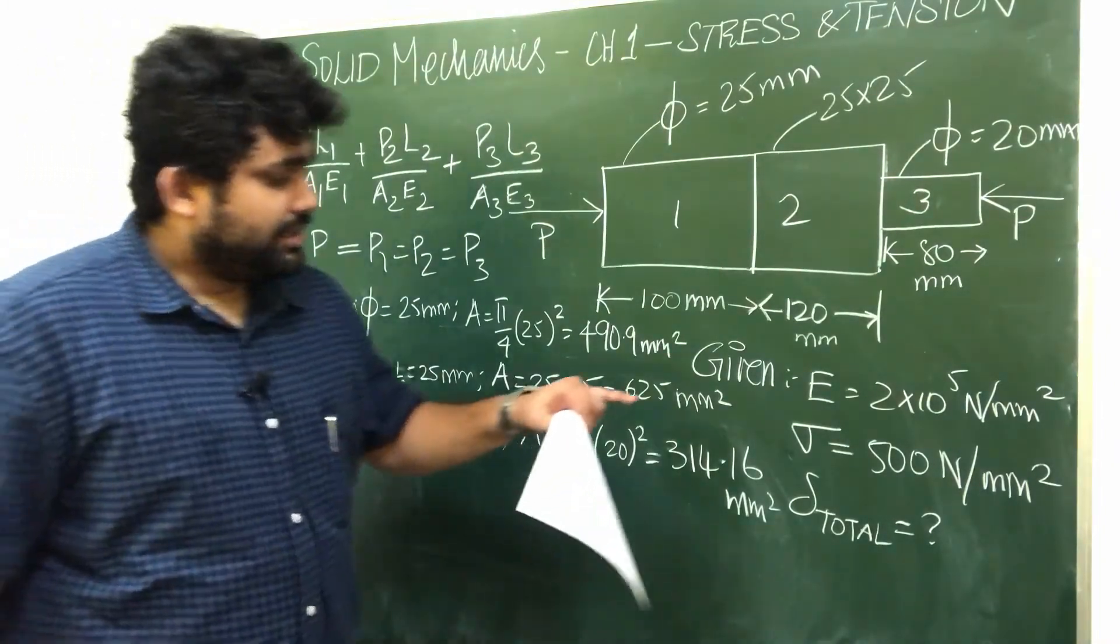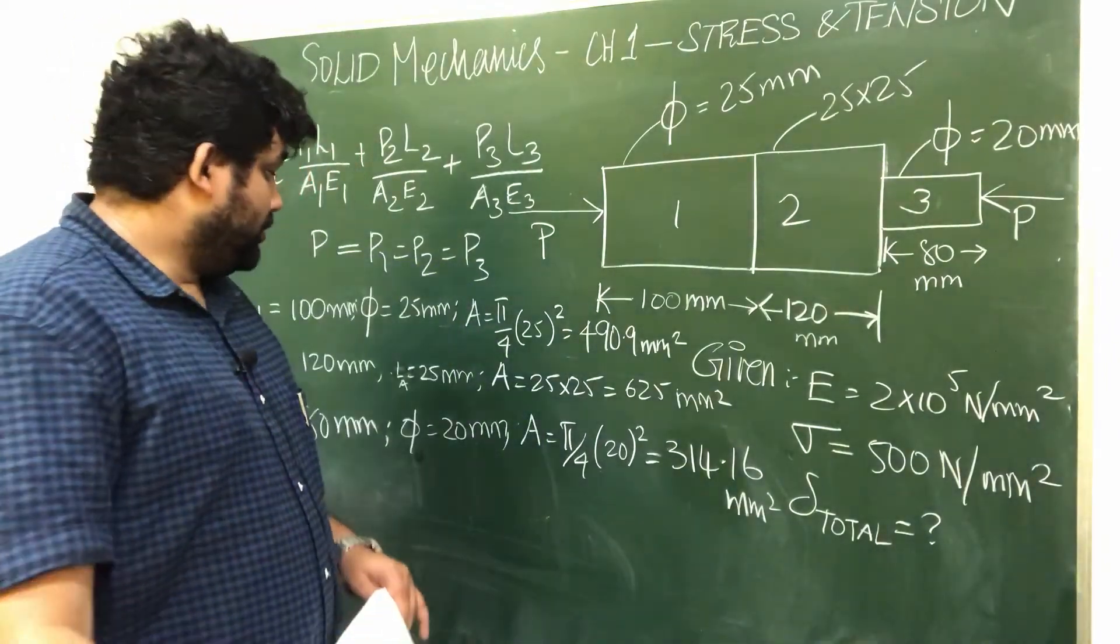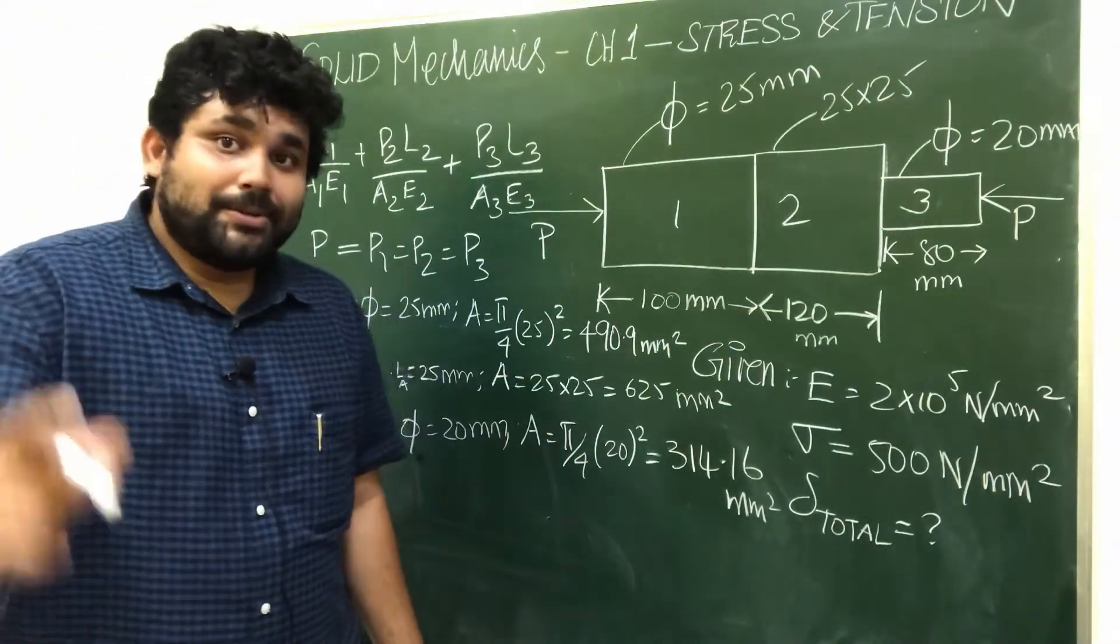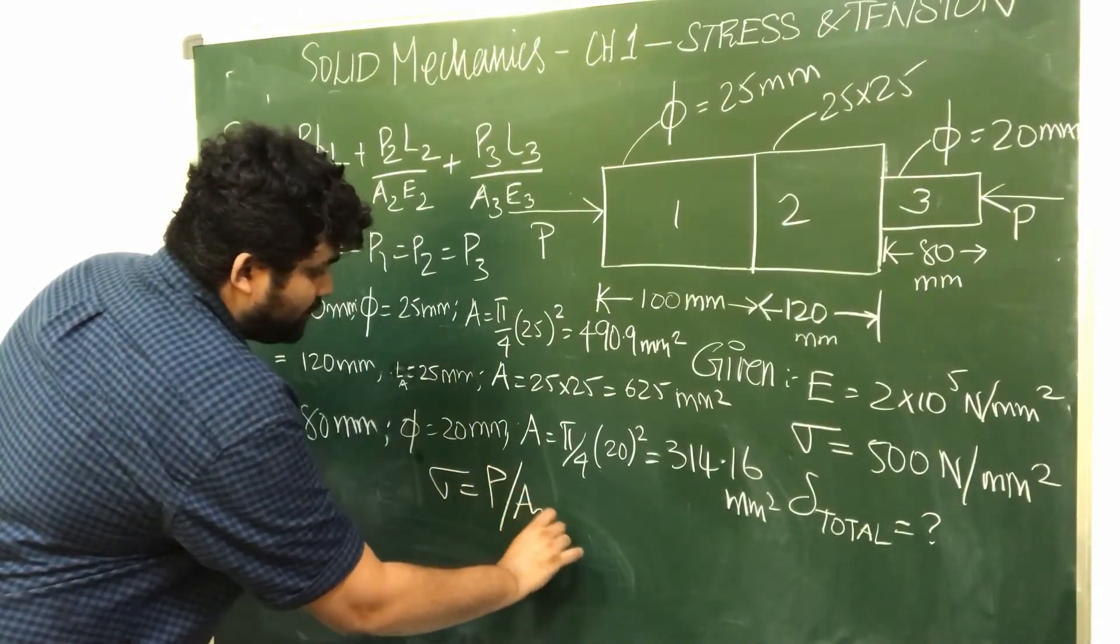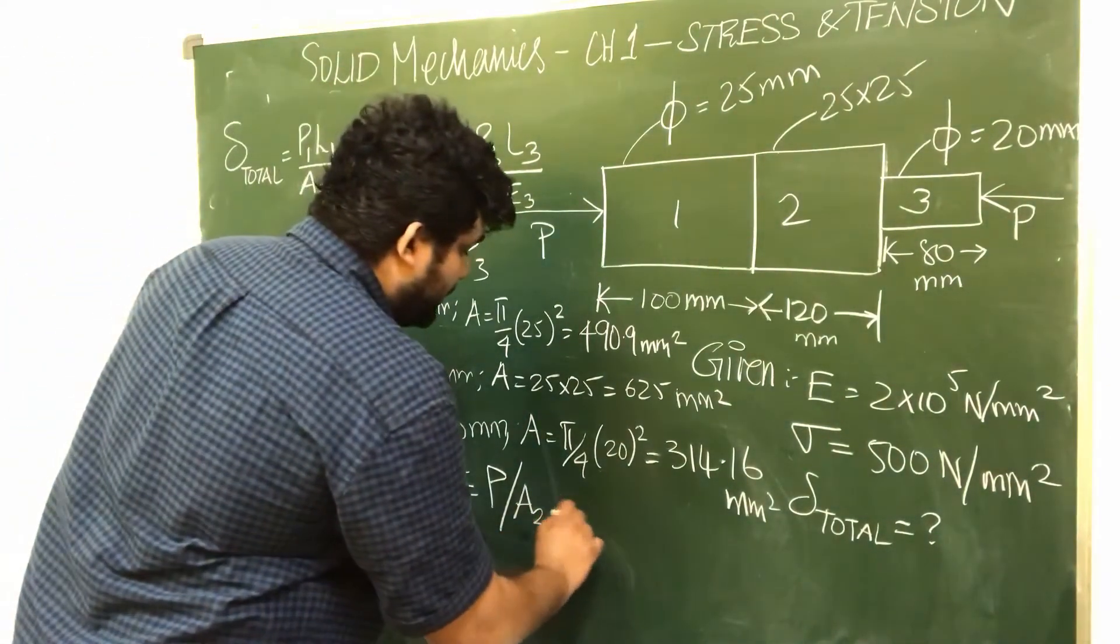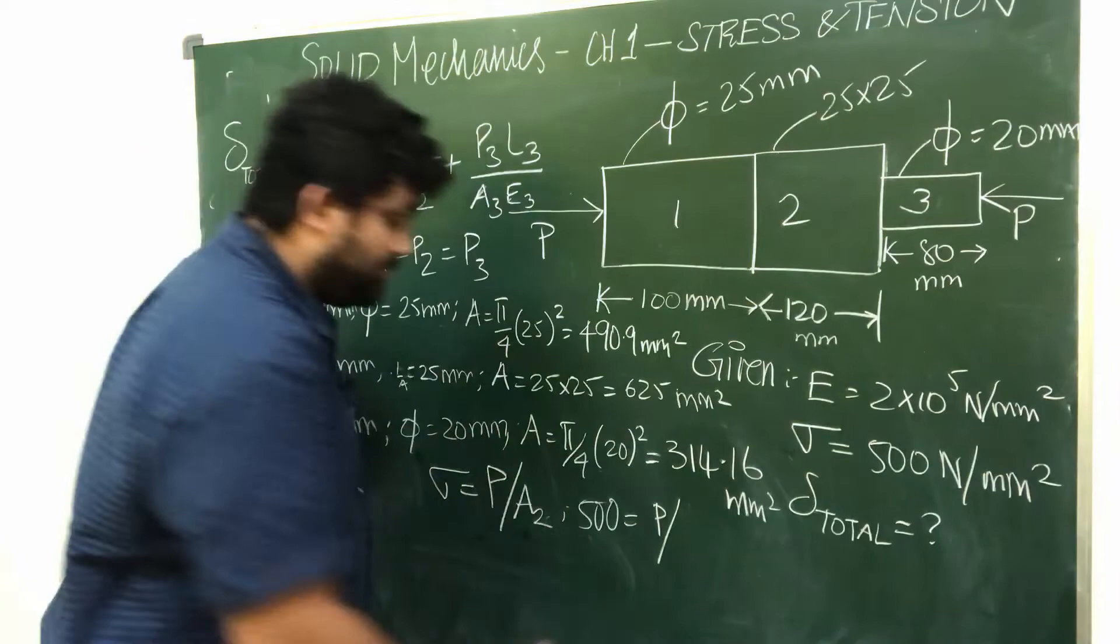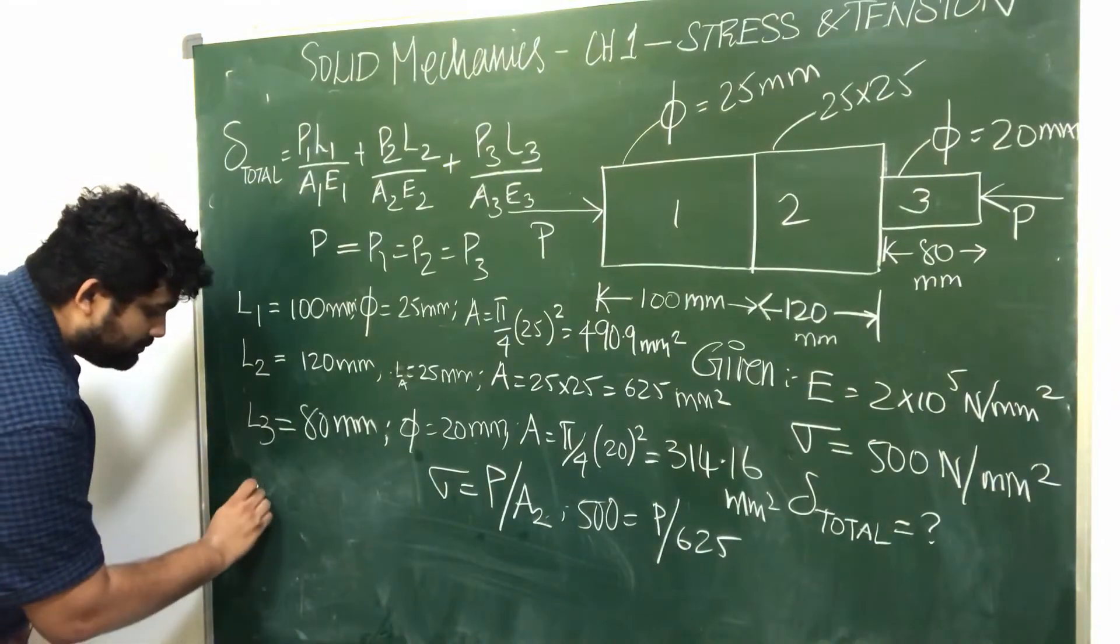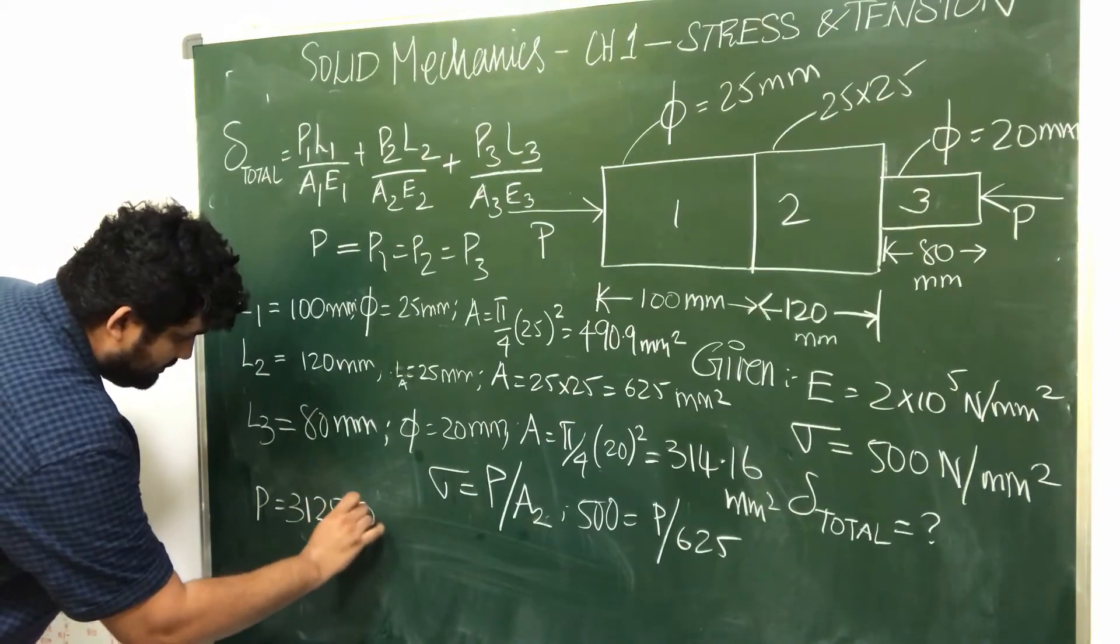Now in the question, maximum stress is given. Among all cross sections, the bar with maximum stress will be the one with minimum area of cross section. Bar 1 has minimum area, so maximum stress of 500 N/mm^2. Stress is nothing but force by unit area, so 500 = P by 490.9 mm^2. So P value is 312,500 Newton.